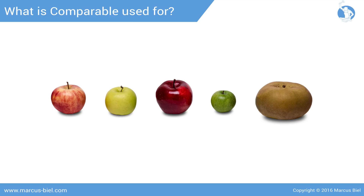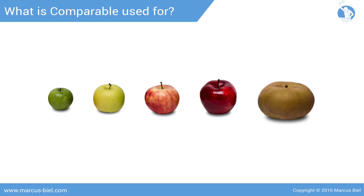Before getting technical, let me clarify the most important question. What is the Comparable interface actually used for? Look at these five apples. If we want to sort them, we must put them in a certain order. To establish this order, we have to compare them with each other. To do this, we continuously ask the question: does this apple come before that apple? Until the list is sorted.